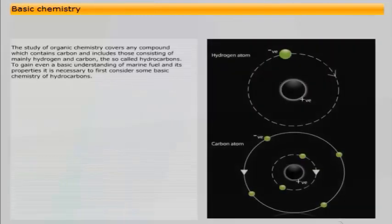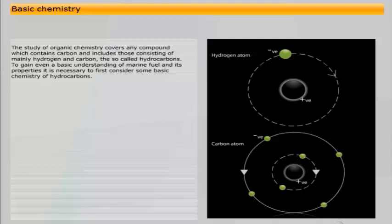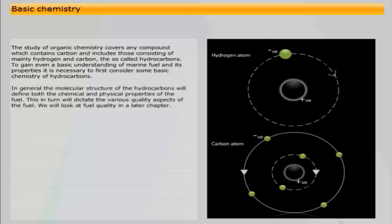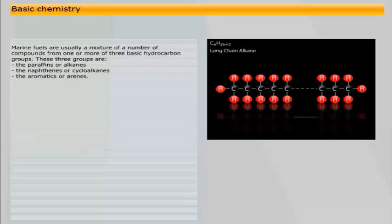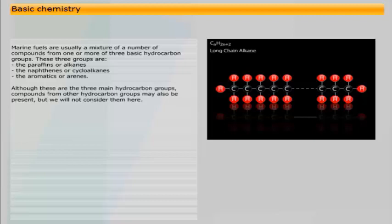The study of organic chemistry covers any compound which contains carbon and includes those consisting of mainly hydrogen and carbon, the so-called hydrocarbons. To gain even a basic understanding of marine fuel and its properties, it is necessary to first consider some basic chemistry of hydrocarbons. In general, the molecular structure of the hydrocarbons will define both the chemical and physical properties of the fuel, which in turn will dictate the various quality aspects of the fuel. Marine fuels are usually a mixture of a number of compounds from one or more of three basic hydrocarbon groups: the paraffins or alkanes, the naphthenes or cycloalkanes, and the aromatics or arenes.